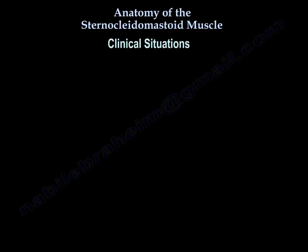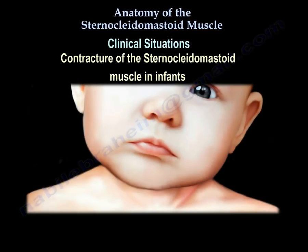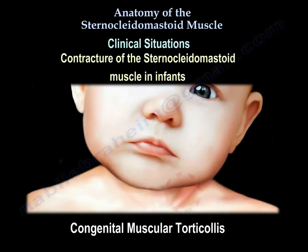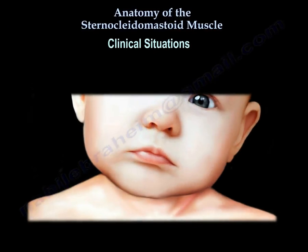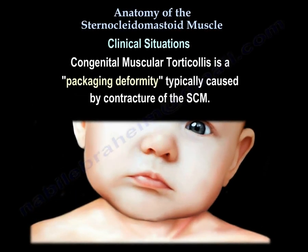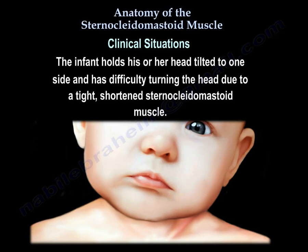Clinical situations involving the sternocleidomastoid muscle. Contracture of the sternocleidomastoid muscle in infants is called congenital muscular torticollis. It is a packaging deformity typically caused by contracture of the sternocleidomastoid muscle. The infant holds his or her head tilted to one side and has difficulty turning the head due to a tight, shortened sternocleidomastoid muscle.